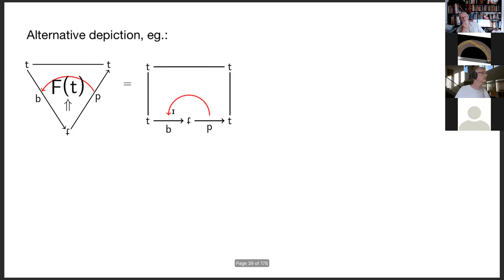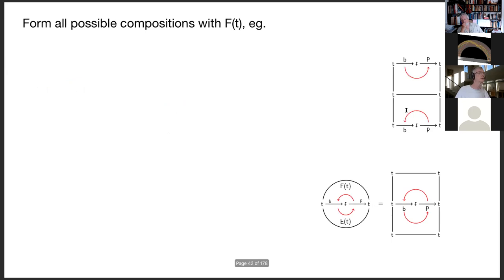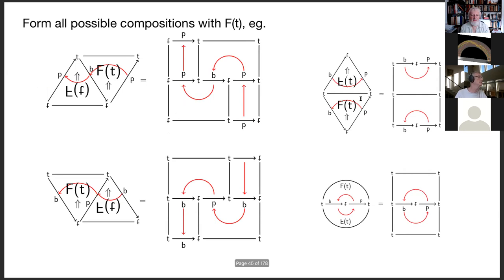We form all compositions of F of T with anything we can. Here's F of T and upside-down F of T — we can compose them in a globular composition along BP, or form a delta-nabla composition along the identity of T, and we can form skew compositions as well. The source of the double arrow is P, the target is P. The source of this is B. These are all the compositions we can do with F of T.